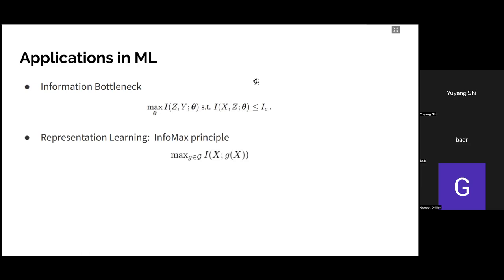A somewhat contrary idea is the InfoMax principle. In representation learning, you want to learn a representation g that maps data X from the data manifold to a low-dimensional representation, while maximizing the retained information using this representation g.